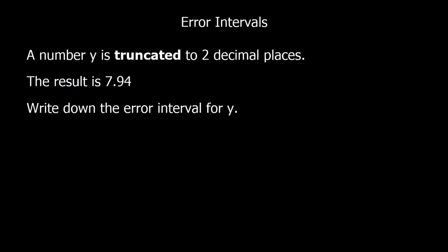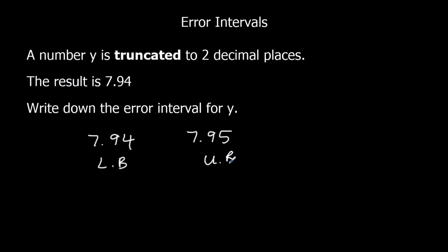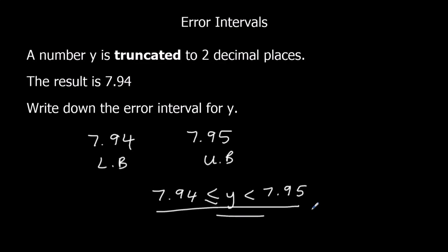One more question: a number y is truncated to two decimal places. The result is 7.94. Write down the error interval for y. So we're going to write down 7.94, and we write down what comes next at two decimal places — that's 7.95. So 7.94 is our lower bound and 7.95 is our upper bound. So y is bigger than or equal to 7.94 and less than 7.95.